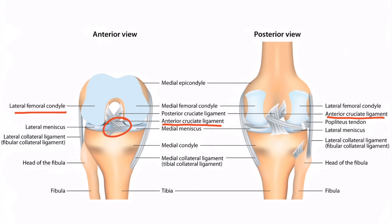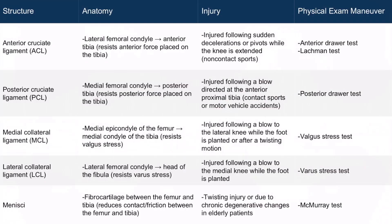For example, if you look at this anterior perspective, and if I tried to pull the tibia out of the screen towards us, the ACL would resist that force because of its firm attachment on the lateral femoral condyle. Going back to the table, notice that the ACL resists anterior force placed on the tibia. An ACL injury most commonly occurs following sudden decelerations or pivots while the knee is extended.